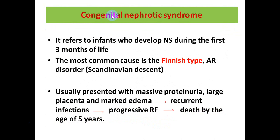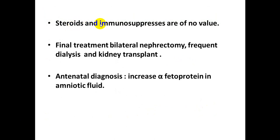Congenital nephrotic syndrome refers to nephrotic syndrome developing during the first three months of life. The most common cause is the Finnish type, which is an autosomal recessive disorder of Scandinavian descent. It presents with massive proteinuria, large placenta, marked edema, recurrent infections, progressive renal failure, and death by age five years. Steroids and immunosuppressive drugs are of no role in its management. The definitive treatment is bilateral nephrectomy, frequent dialysis, and renal transplantation. Antenatal diagnosis may be suggested by increased alpha-fetoprotein in the amniotic fluid.